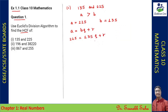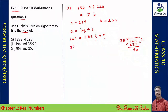Now we have to find the quotient and remainder. When I divide 225 by 135, we are left with remainder 90. So I can write this equation as 225 = 135 × 1 plus remainder 90.